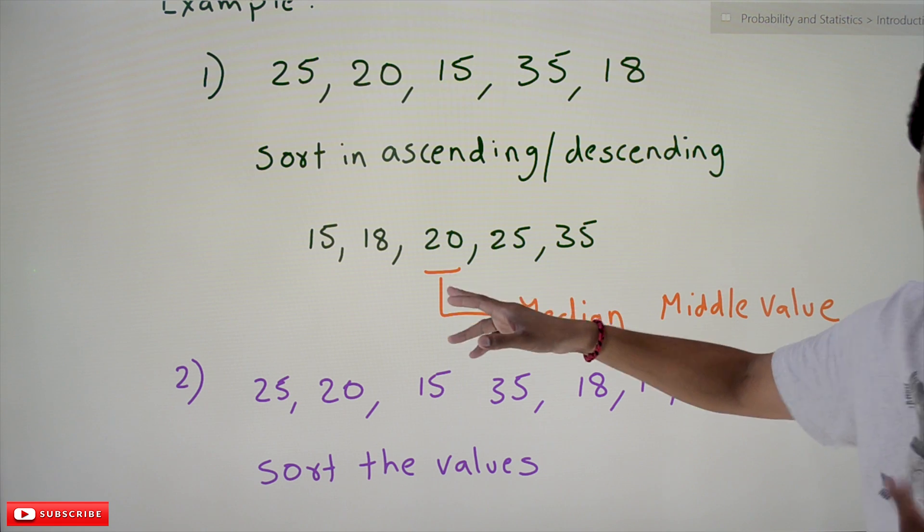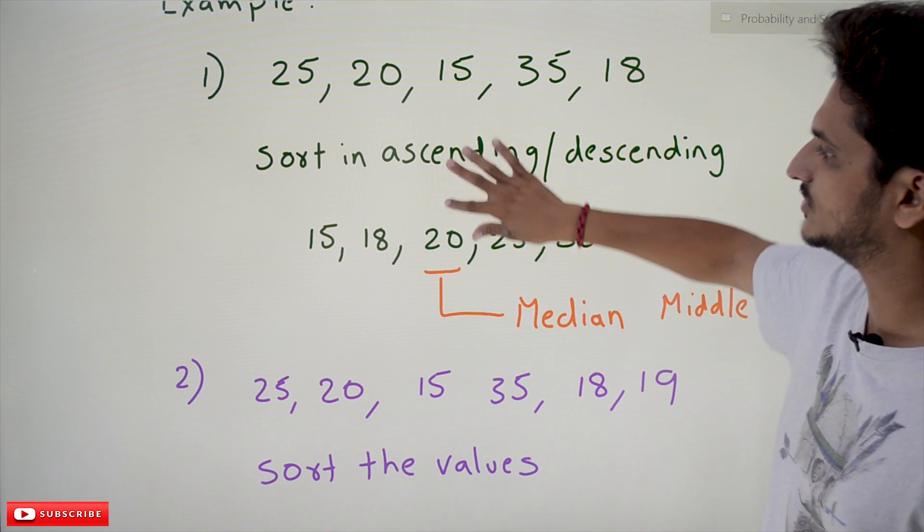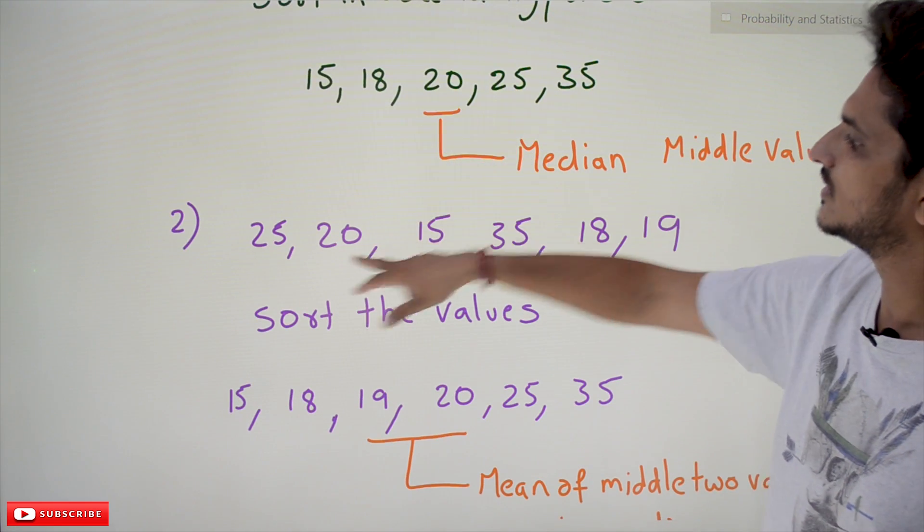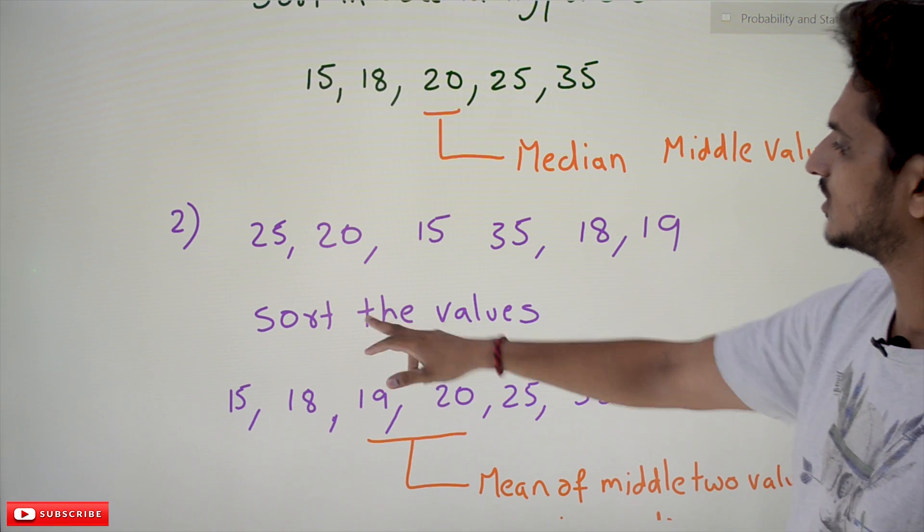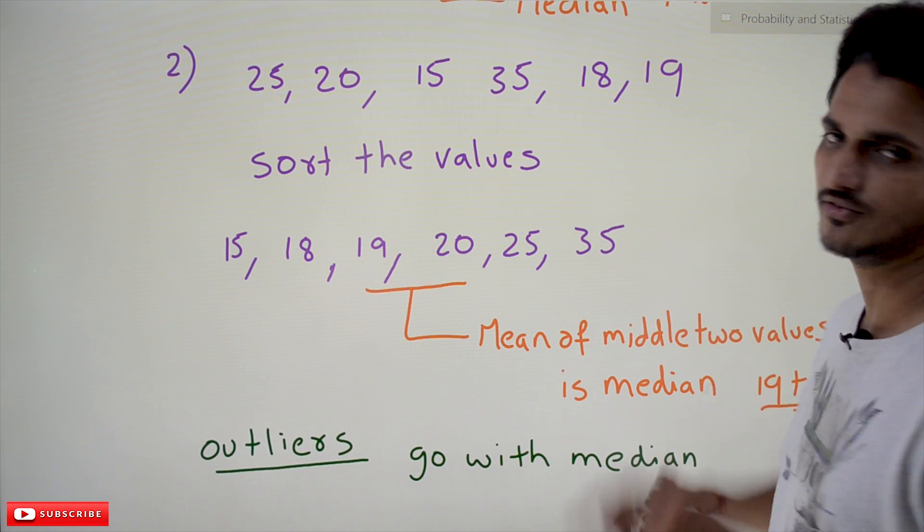But what happens if your data consists of even values? Let's take an example: 25, 20, 15, 35, 18, 19. Sort the values. After sorting the values: 15, 18, 19, 20, 25, 35.